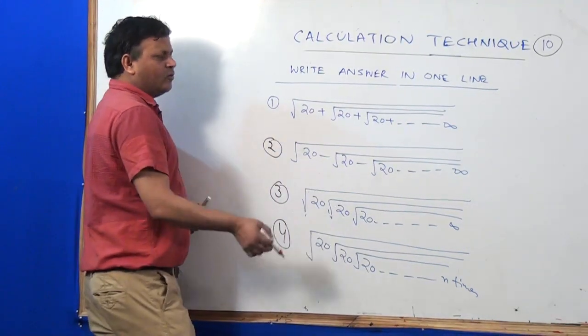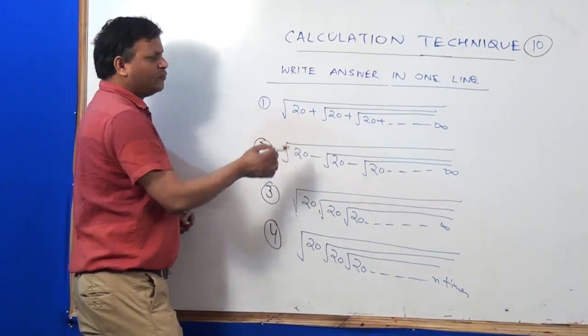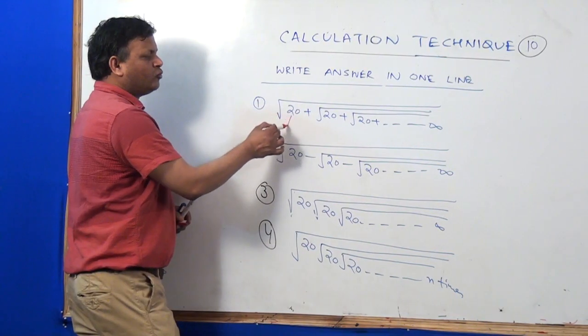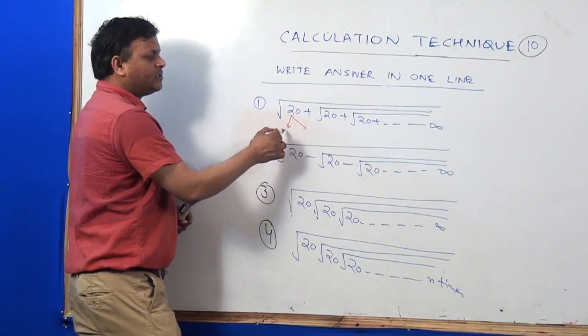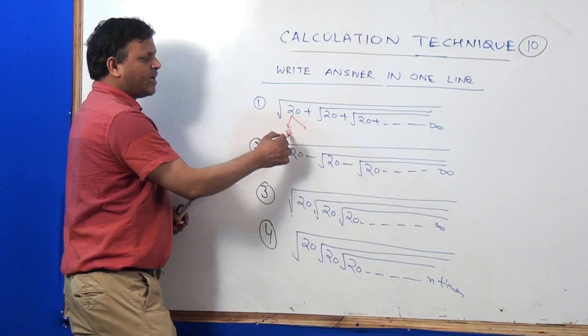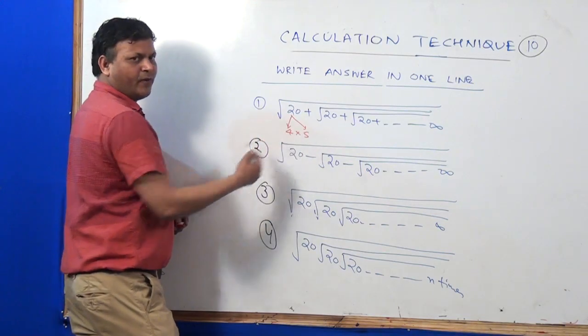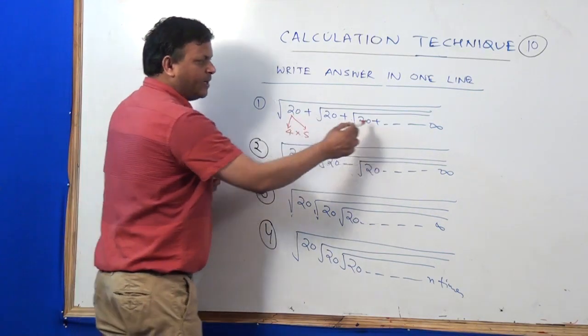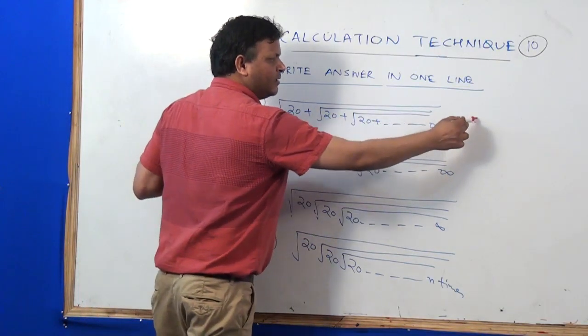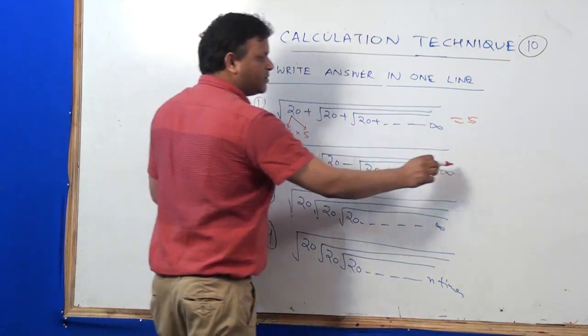But you know that some people ask me, if you break 20 into two factors, write it this way so their multiplication comes to that integer, 4 into 5. If it is plus, then the answer will be 5. If it is minus, then the answer will be 4. Right?